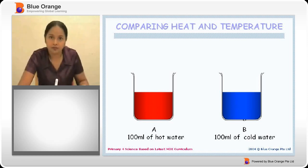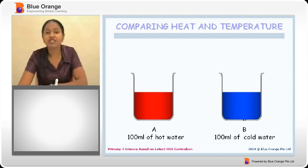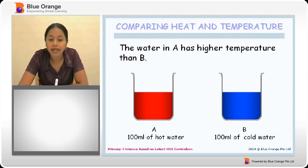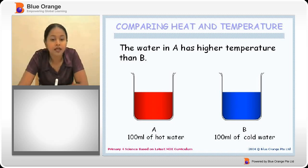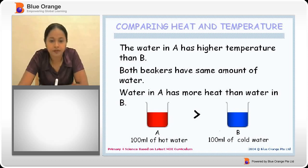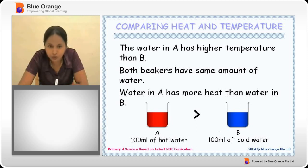Let's have an example. Look at the pictures. You've got beaker A, which has 100 millilitres of hot water, and beaker B with 100 millilitres of cold water. Both beakers have the same amount of water, but their temperatures are different. Beaker A has a higher temperature than B because A contains hot water and B contains cold water. Water in A has more heat than water in B, which is true because hot water will definitely have more heat than cold water.